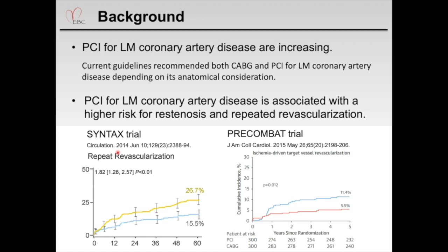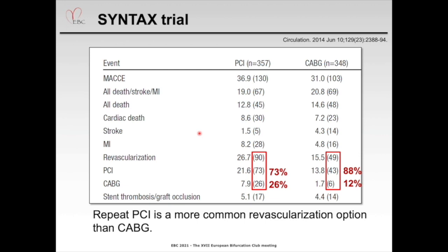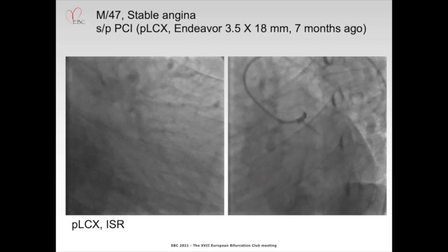In the SYNTAX trial, 5-year incidence for repeat revascularization after PCI for left main coronary artery disease was 26.7%. In the PRECOMBAT trial, ischemic-driven target-based revascularization was 11.4%. Importantly, as you can see in the SYNTAX trial, there are patients who underwent repeat revascularization after left main coronary artery disease PCI, and some left main in-stent restenosis cases might be included in this population. Repeat PCI was a more common revascularization strategy for this population than CABG.